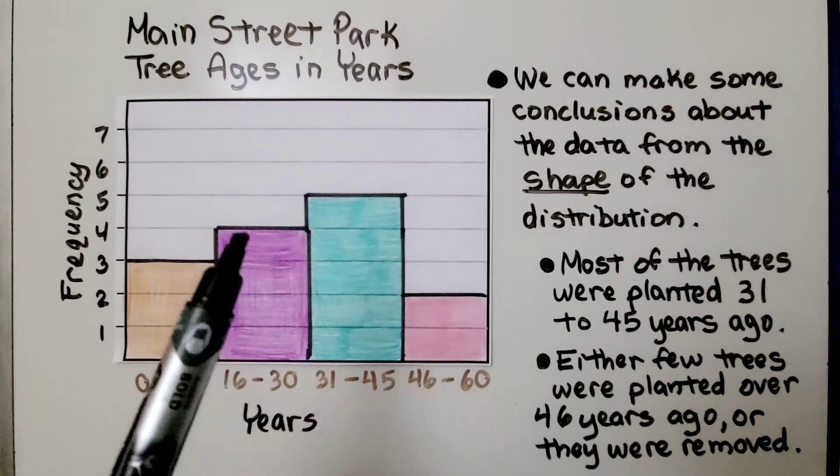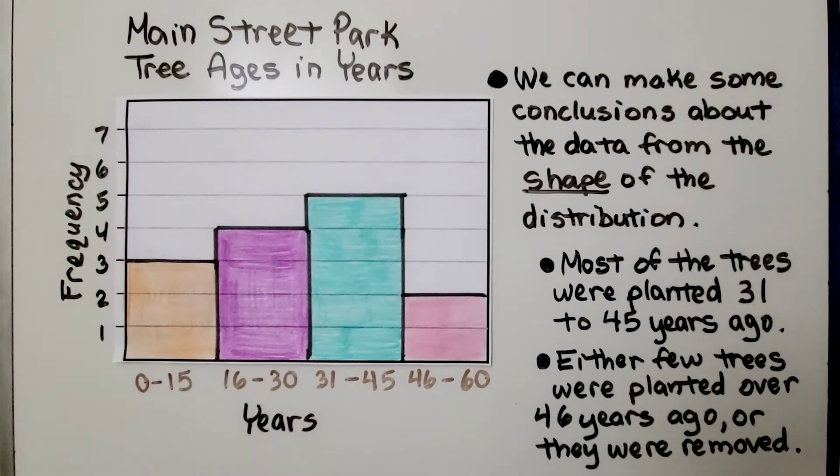It's taller here. They're higher bars. Most of the trees were planted 31 to 45 years ago. And either fewer trees were planted 46 years ago or longer, or they were removed. So it doesn't necessarily mean that fewer trees were planted. It could be that they planted a lot, but they were removed for some reason.